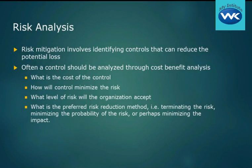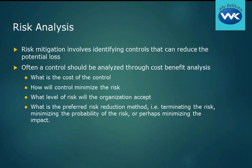Part of the risk mitigation — remember, mitigation means lowering of the risk — involves identifying controls that can reduce the potential loss. So that means we need to find some controls, and I've given you some examples. With the building, one of the controls was the sprinkler system. That was a way we could lower the risk, and that means I could reduce the potential loss.